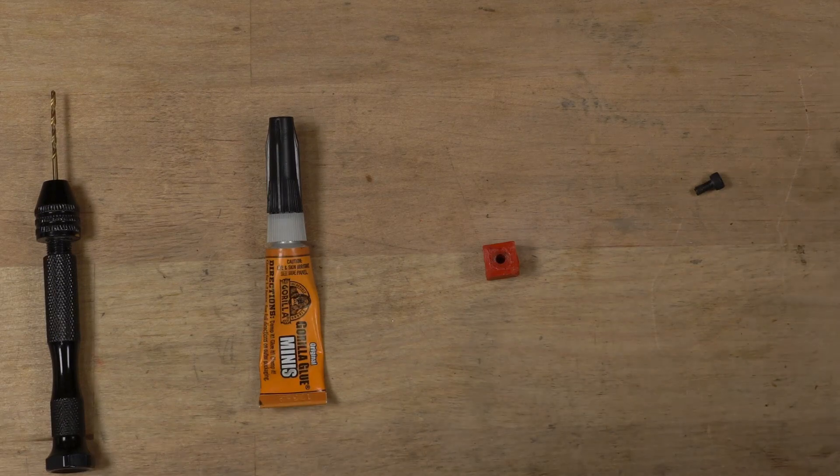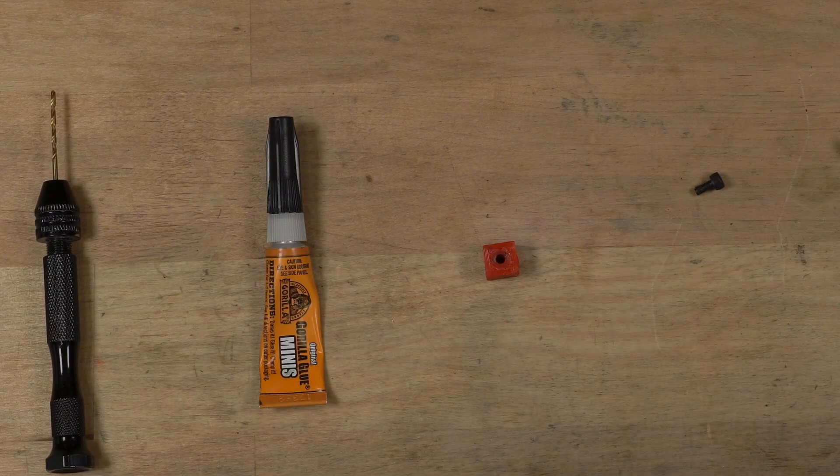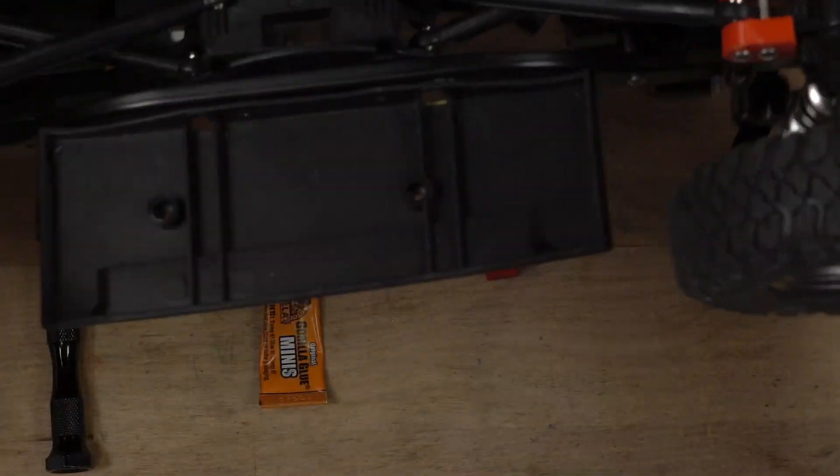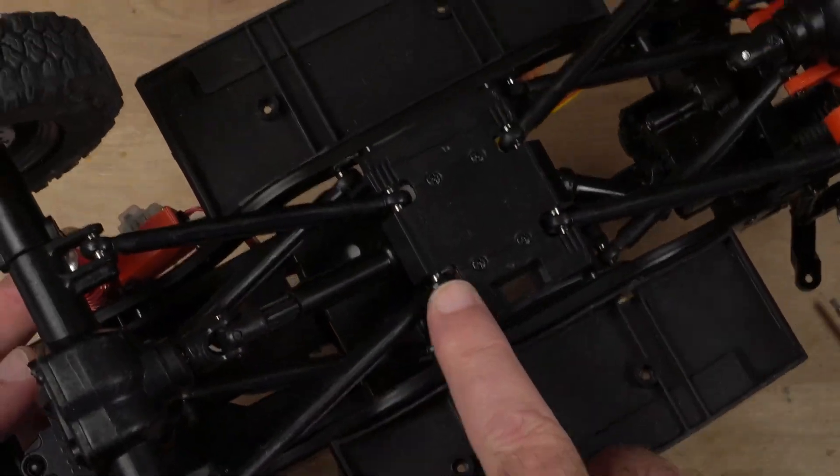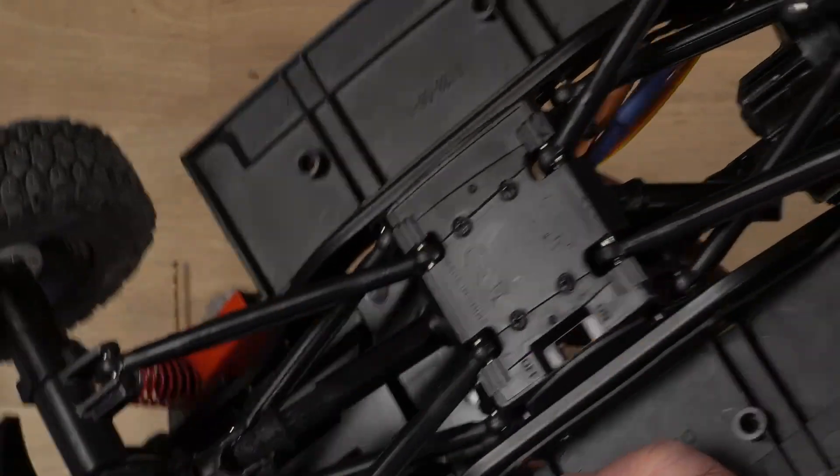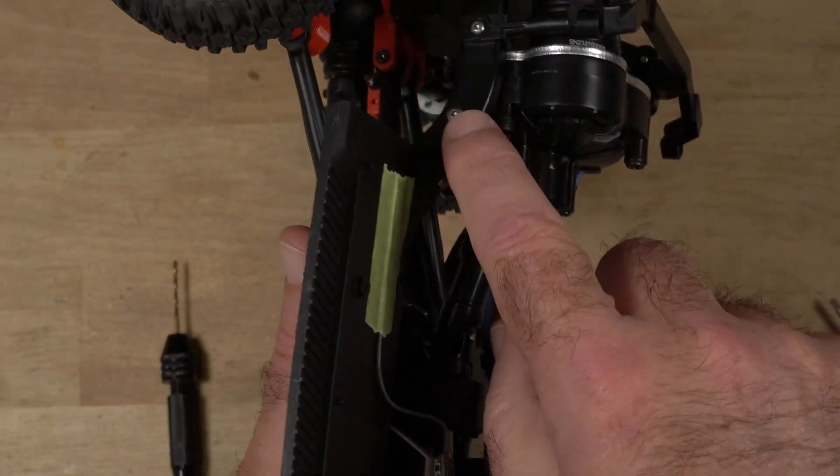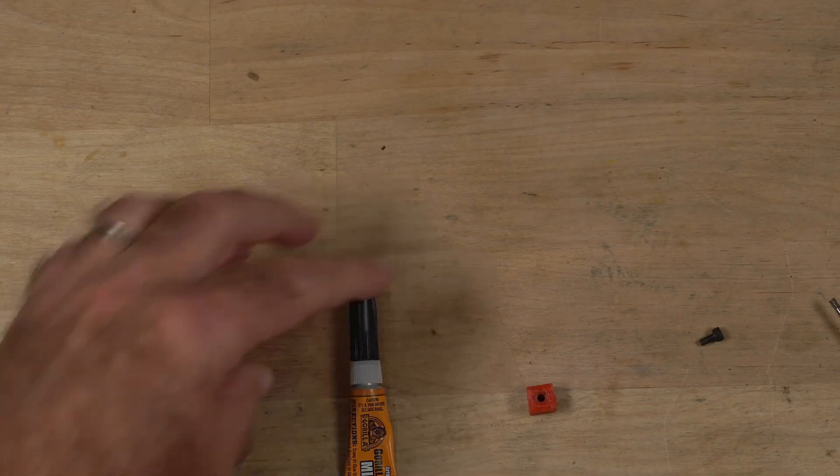A good example would be on your rock crawler, like one of these screws right here that stripped out that go inside of this piece, or part of the transmission screw stripped out. So let me show you how I fix that.